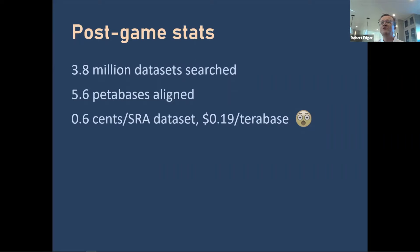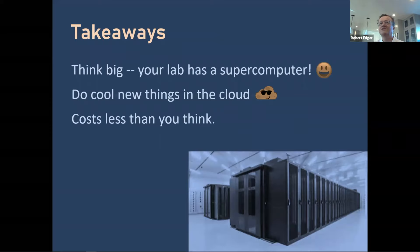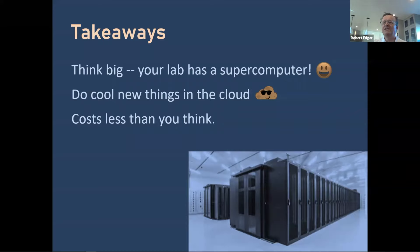Here's a quick summary: we searched almost 4 million SRA datasets, we aligned something like six petabases at a very low cost — less than one cent per dataset, or 20 cents per terabase. My takeaway message from this exercise is that everyone has access to a supercomputer out there. What kind of cool new things could you do if you ran it on Amazon, Google, or Azure? The cost is probably much less than you think, and you don't have to manage any infrastructure. It's kind of inspirational in terms of thinking about new things to do.